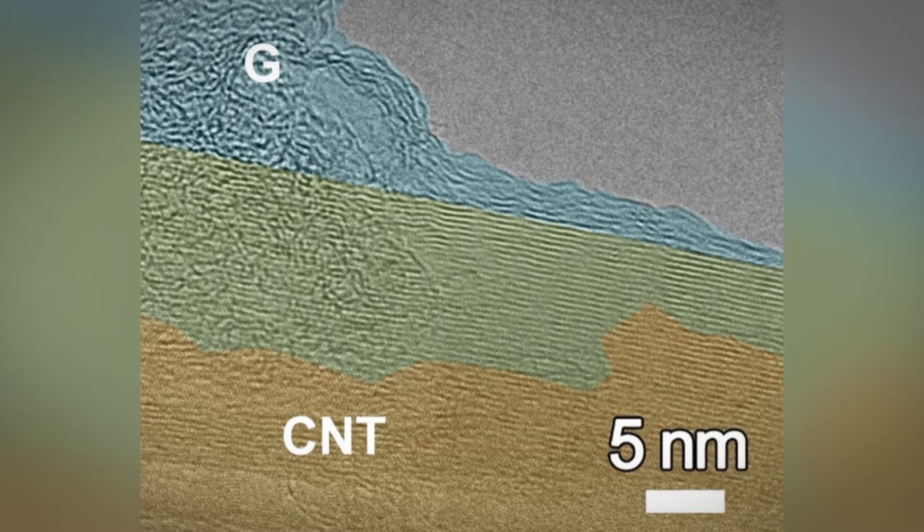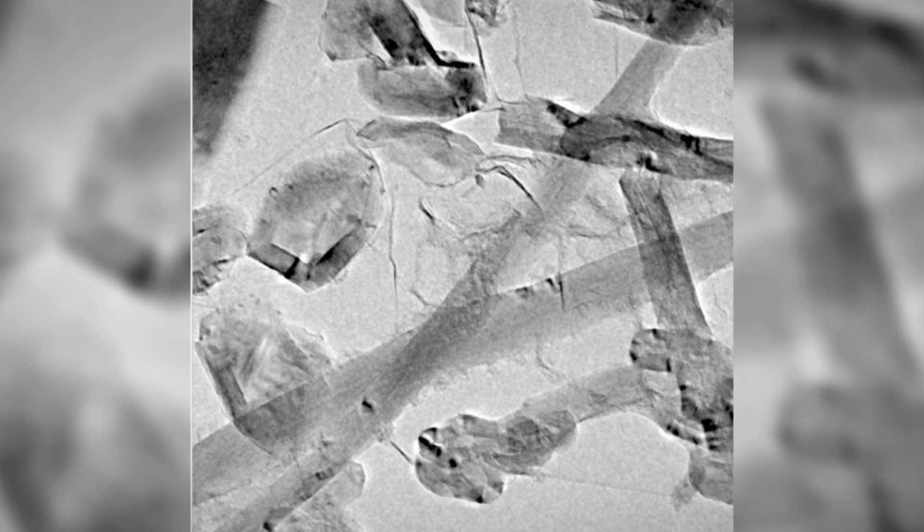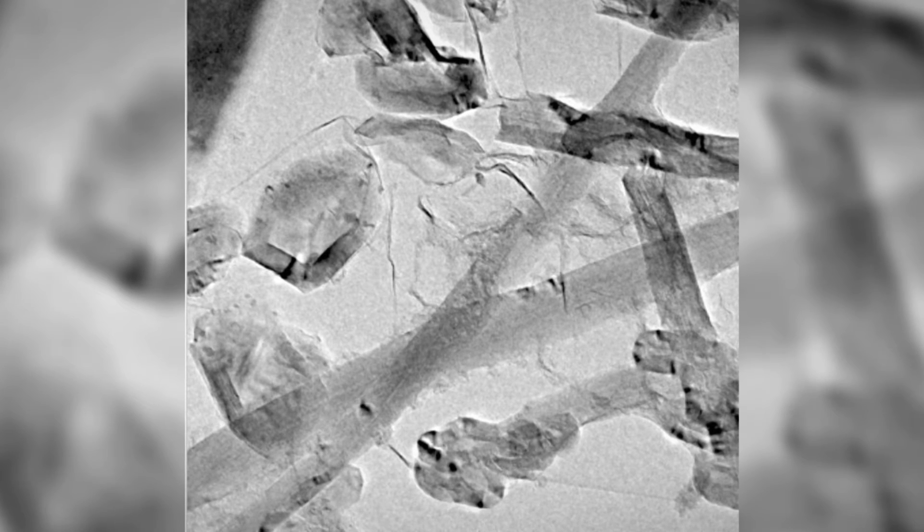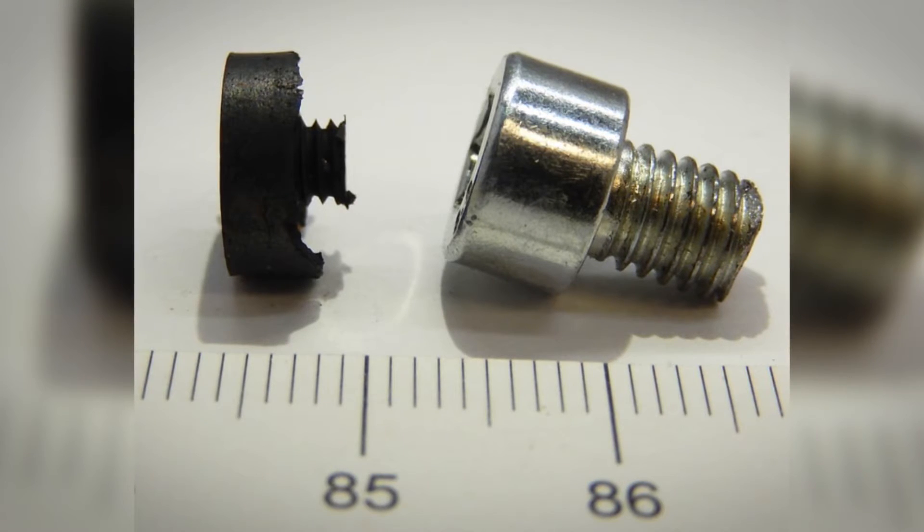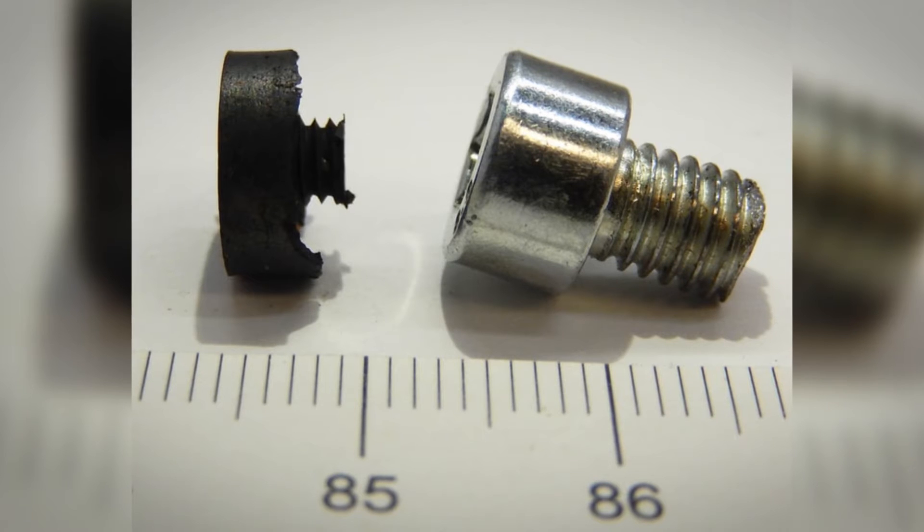The resulting material can be molded into any shape and can support up to 3,000 times its weight before springing back to its original height. By comparison, graphene foam without nanotube supports began to struggle at just 150 times its own weight.